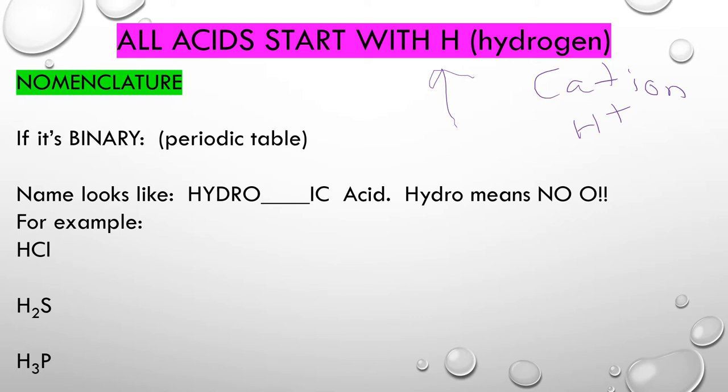If it's binary — only two elements — we're going to use the periodic table, not the polyatomic ion chart. The name always looks like this: if it's just binary, it's going to read as 'hydro blank acid.' This is huge and this is what people forget a lot. Hydro means no O.